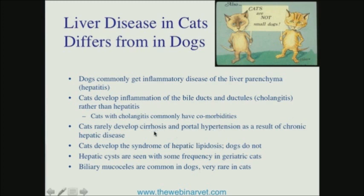Because portal hypertension relies on cirrhosis being present in order to get the pressure changes needed, cats rarely develop portal hypertension. Rack your brain and try to think about the last time you saw a cat in liver failure with ascites — you're probably going to have a hard time coming up with one. Most of the time when cats have ascites, they have something other than liver disease: carcinomatosis, sometimes pancreatitis, other causes of peritonitis, but rarely liver disease and cirrhosis.